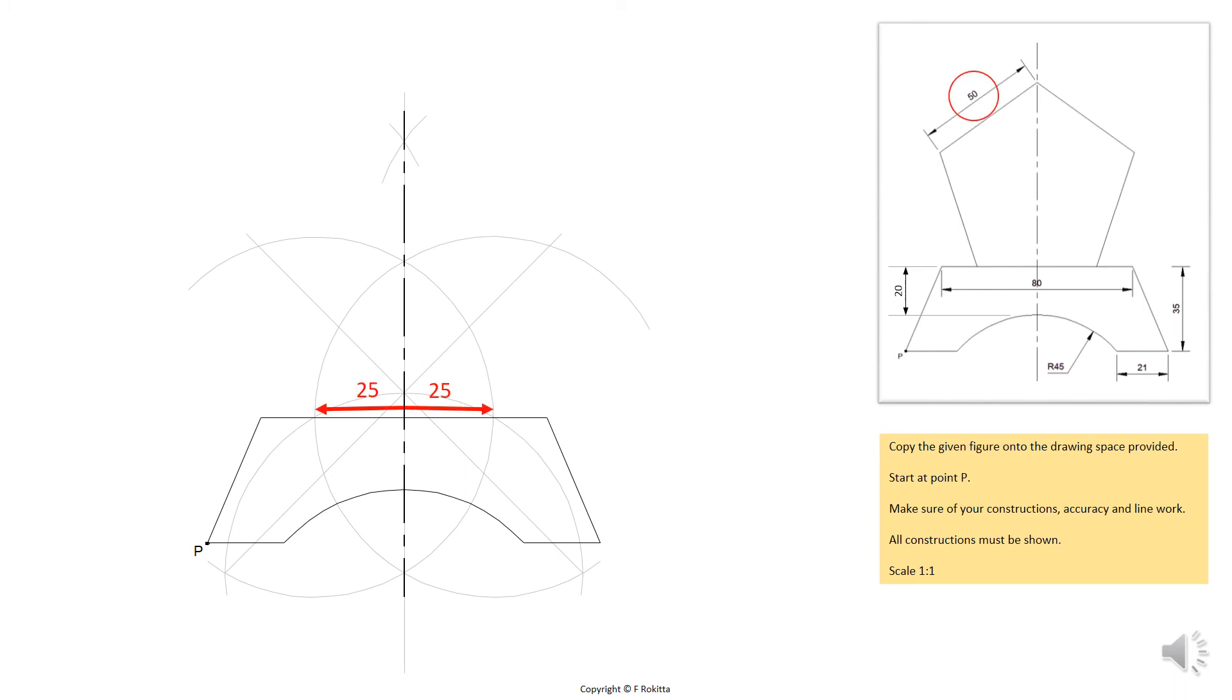Because the base length of your pentagon is 50 mm as indicated, it is important that you measure from the centre line 25 mm to the left and right on the top line of our base. This is equal to the base length of 50 mm as shown in the schematic.